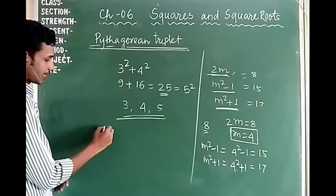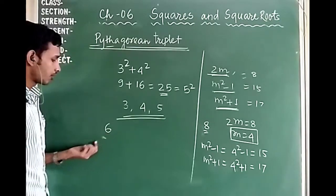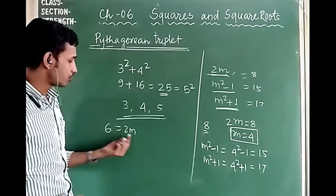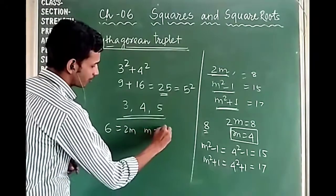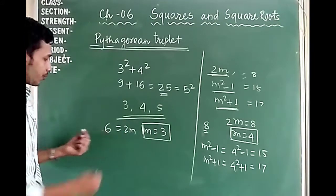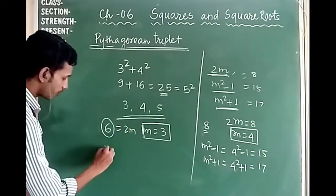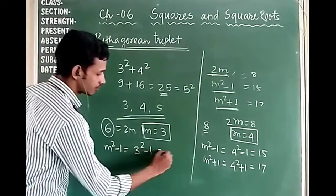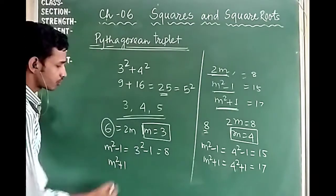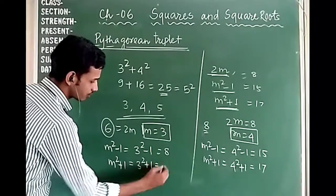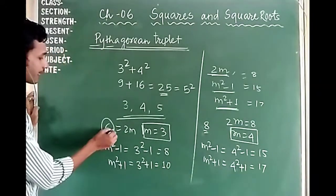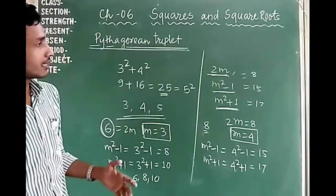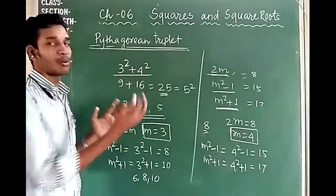Similarly, suppose a number in the Pythagorean triplet is 6. Since 6 is even, we set 2m equal to 6, so m equals 3. The second number is m squared minus 1 equals 3 squared minus 1 equals 8. The third number is m squared plus 1 equals 9 plus 1 equals 10. So the Pythagorean triplet is 6, 8, and 10.